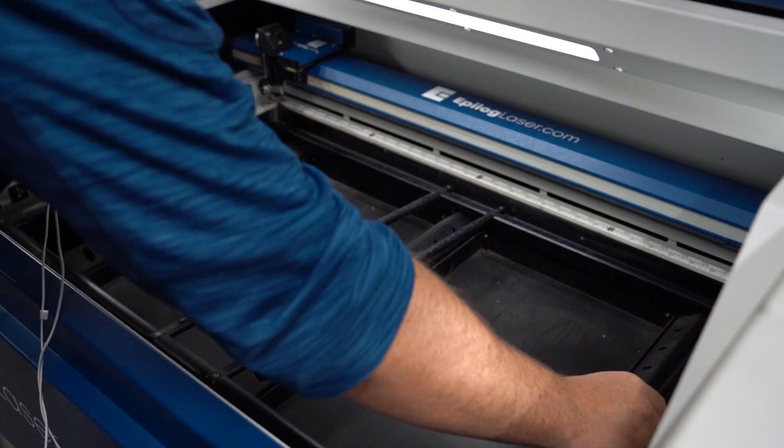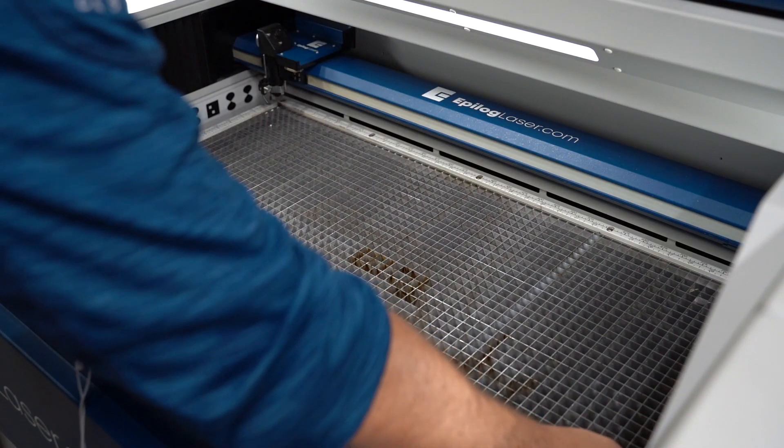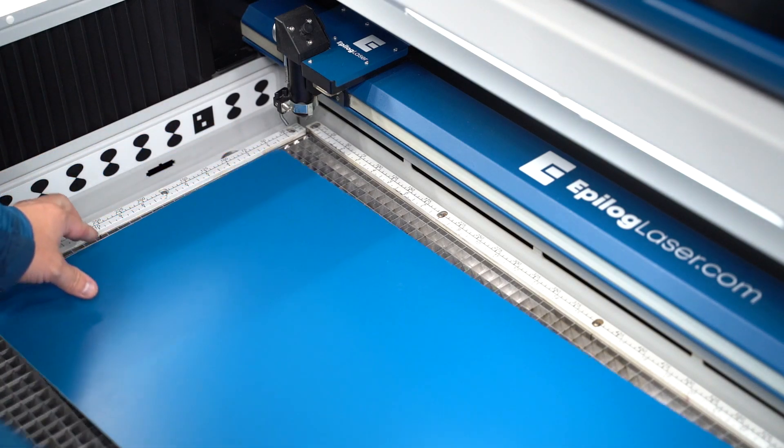Since we'll be cutting out our sign after we engrave it, we'll begin by inserting our vector cutting grid. Then we'll place our sheet of engraveable plastic into the top corner of our Fusion Pro.